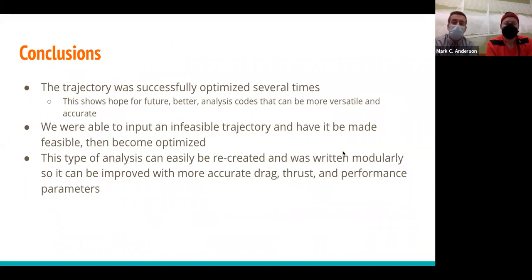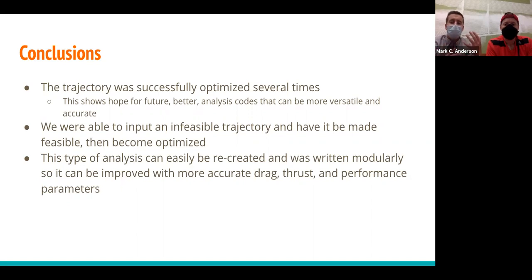In conclusion, our optimizer works and shows promise for future, more refined analyses. The code is modular — you can swap out the drag function and other components. We successfully took infeasible inputs and made them feasible. This type of analysis could be easily recreated at a startup rocket company and could serve as a good starting point for initial analyses. With improved estimates for mass, drag, and engine performance, this could become a very capable simulation.